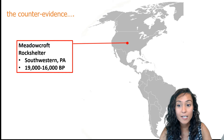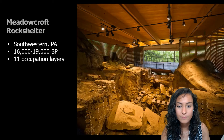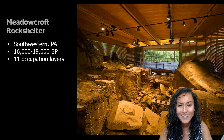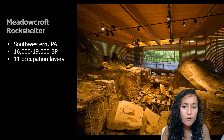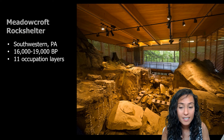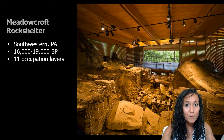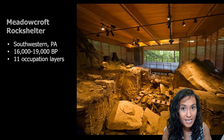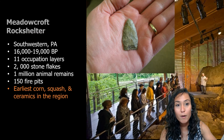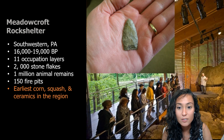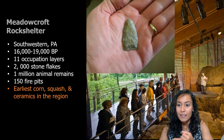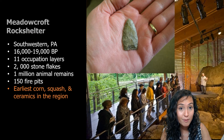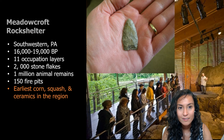Evidence disputing the Clovis orthodoxy was found at a site called Meadowcroft in southwestern Pennsylvania. Meadowcroft was first excavated between 1973 and 1978 by archaeologist James Adovasio. The original carbon dates from this rock shelter indicated that the site likely dated between 19,000 and 16,000 years ago — almost 10,000 years prior to when Clovis points were first dated. What they found were roughly 20,000 artifacts, including stone flakes and tools, fire pits, millions of animal remains, and some of the earliest evidence of corn, squash, and ceramics.